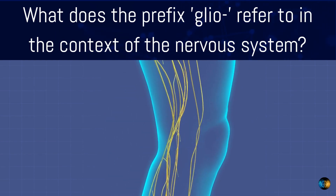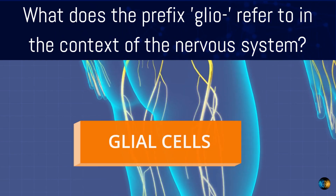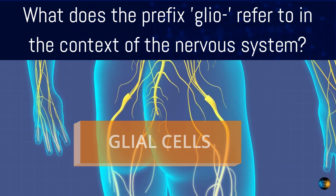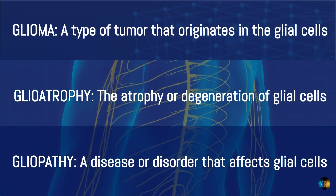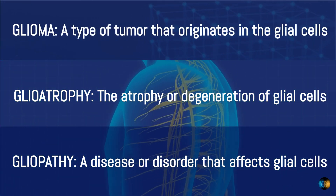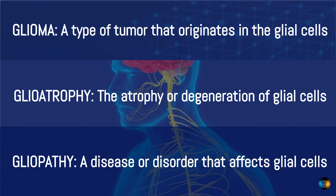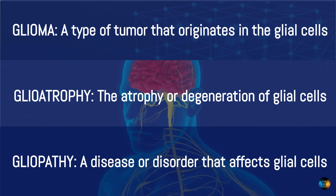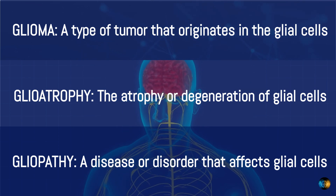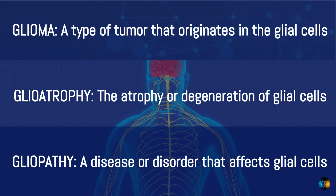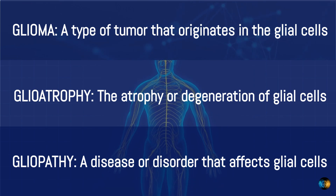What does the prefix 'glio' refer to in the context of the nervous system? Glial cells. For example, glioma is a type of tumor that originates in the glial cells; glioatrophy is the atrophy or degeneration of glial cells; and gliopathy is a disease or disorder that affects glial cells.